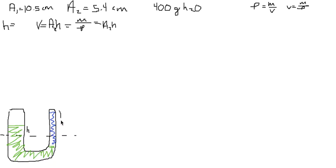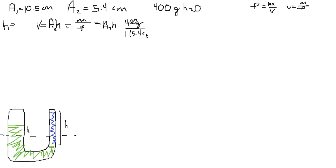That is how we find the height — or length — of the water. Plugging in values, we have 400 grams of water divided by the density of water, which is 1 gram per cubic centimeter, divided by our second area, which is 5.4 cm². We end up getting a height of 400 divided by 5.4, which equals 74.07 centimeters.